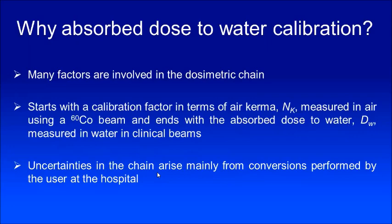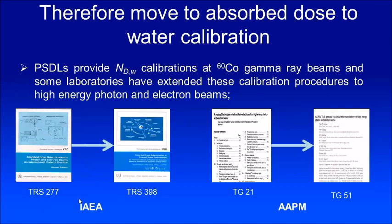Uncertainties in the chain arise mainly from conversions performed by the user at the hospital. To avoid that, in year 2000, IAEA came up with TRS-398, which recommended absorbed dose calibration in water and absorbed dose measurement in water directly. So TRS-277 became TRS-398. Subsequently, TG-21 of AAPM was also converted to TG-51, very similarly to what IAEA had done.